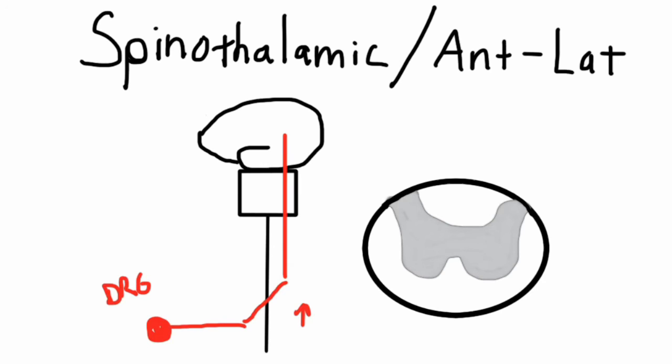And that tract sits right here, and it would enter from our DRG like this, and then cross over like that.